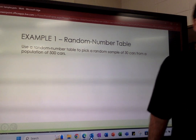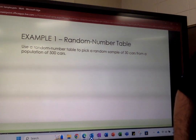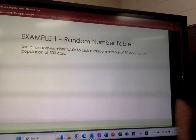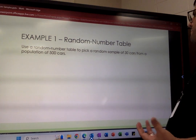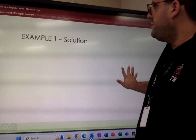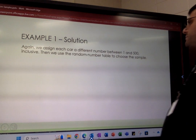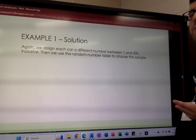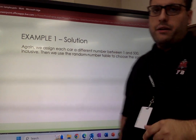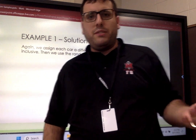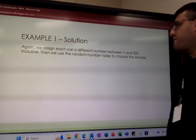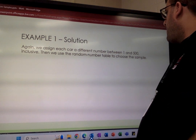Here's an example. Let's say I want to know if the emission systems of a bunch of Toyotas satisfy pollution control standards. I want to pick a random sample of 30 cars from a population of 500 cars. One way to do that is with what's called a random number table. First, we're going to assign each car a different number between 1 and 500. It doesn't matter what particular order we put those numbers in — just make sure each car has a number between 1 and 500.